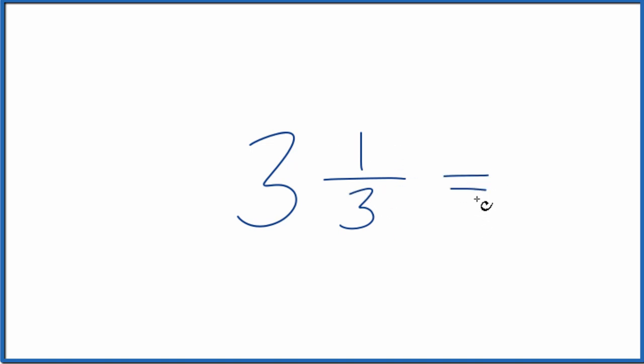To get it to an improper fraction, here's how you do it. You take the whole number and multiply it by the denominator. So 3 times 3, that gives us 9.